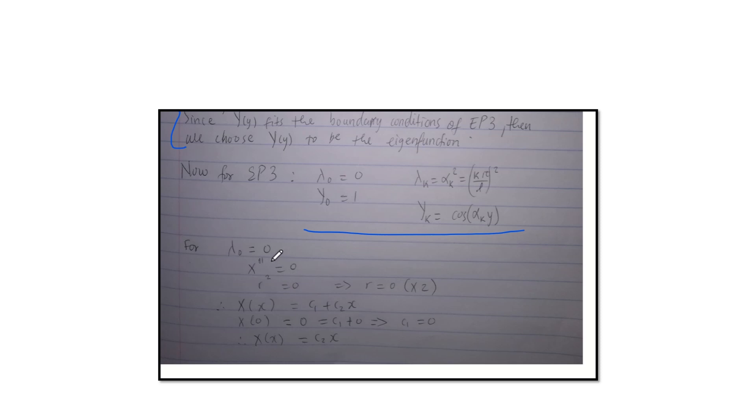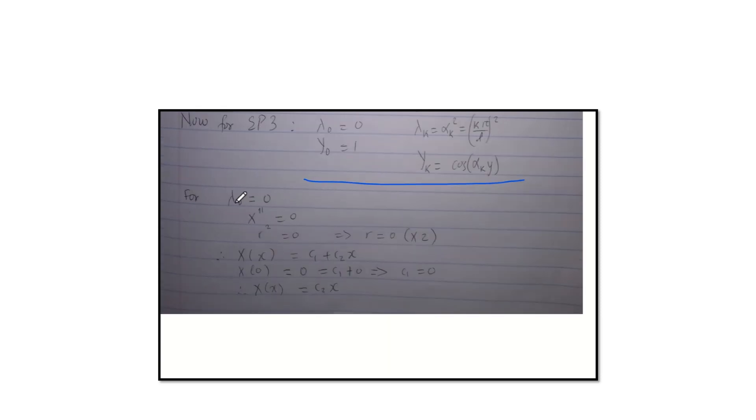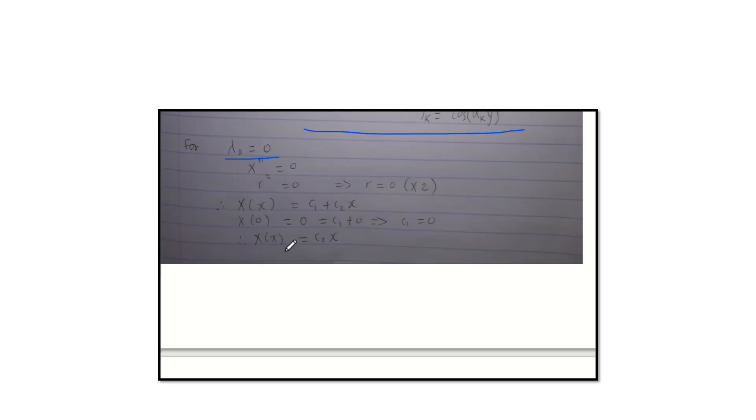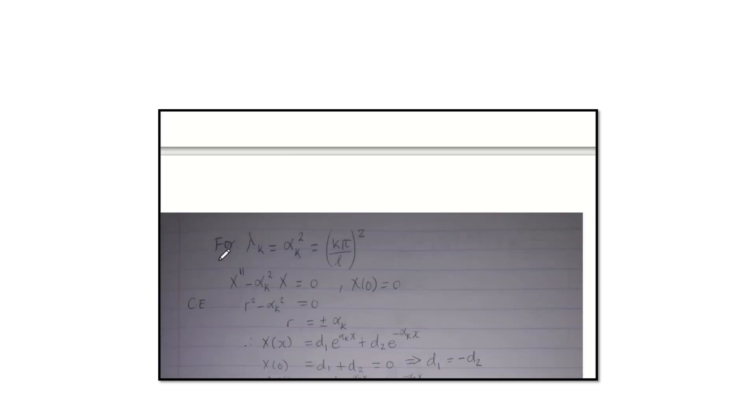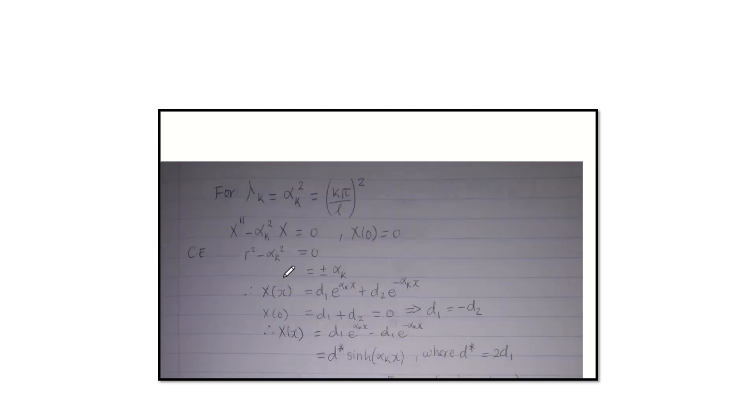So now we're gonna have case one where we taking eigenvalue equals zero. So we solve it, and then we get this as our function. So now we go to the second case where eigenvalue is alpha squared, which is equal to that. So we plug in our alpha squared, and then we get our R as that. So that means our x values is of this form.